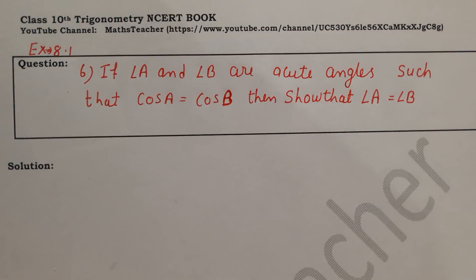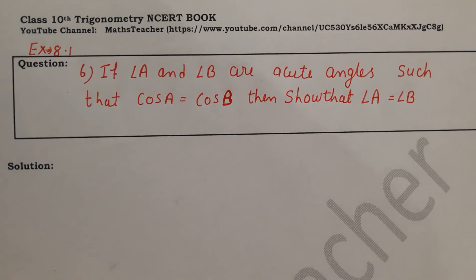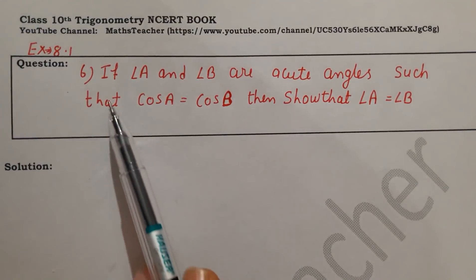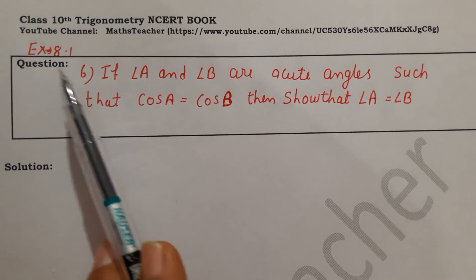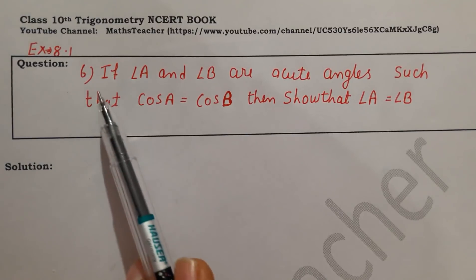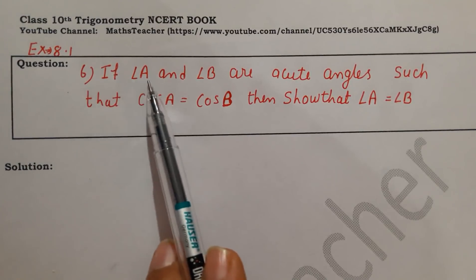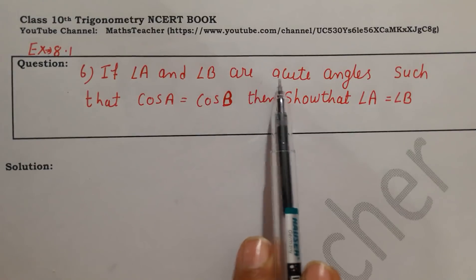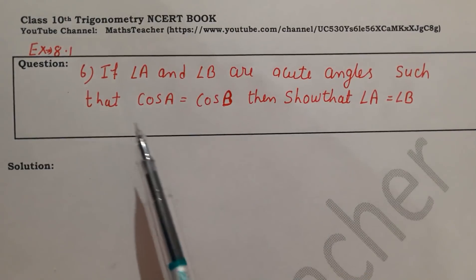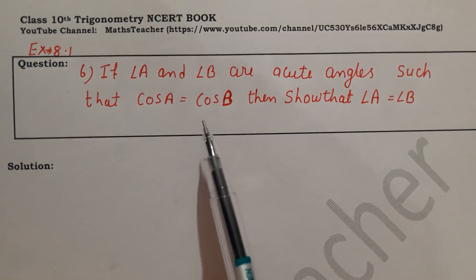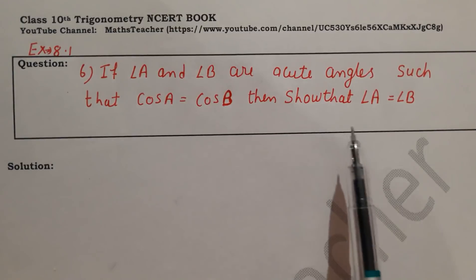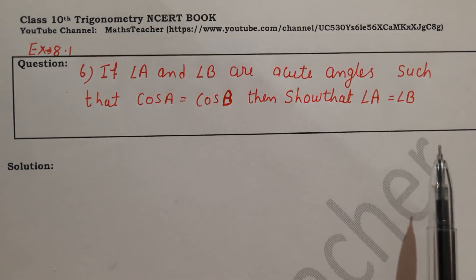Hello viewers, welcome to my channel. Today we have another question of trigonometry from Exercise 8.1. I'm Rashmi, your math teacher. The question is Question Number 6: if angle A and angle B are acute angles such that cos A equals cos B, then show that angle A equals angle B.